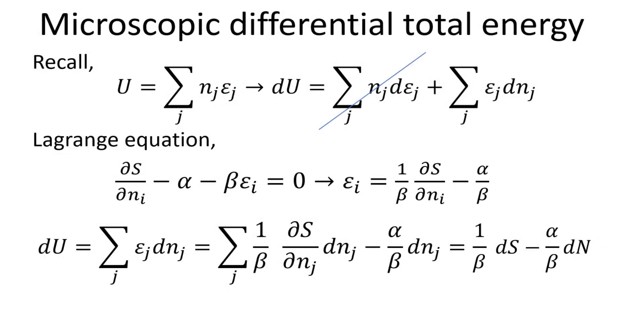The way to determine the constants alpha and beta is to compare our microscopic expression of the total energy with that of the thermodynamic law.